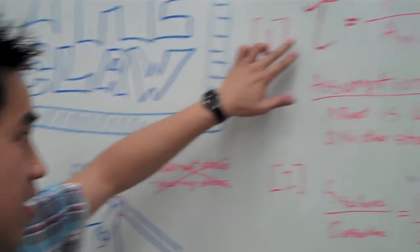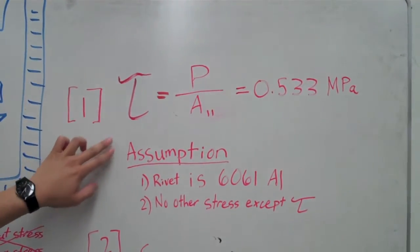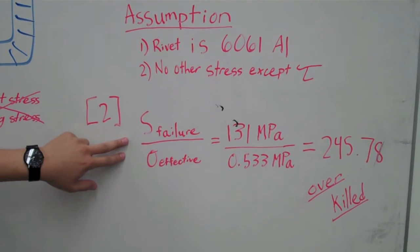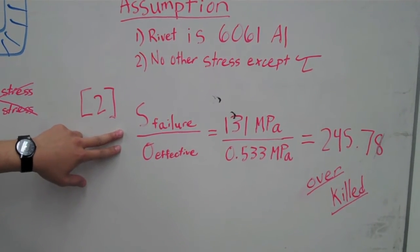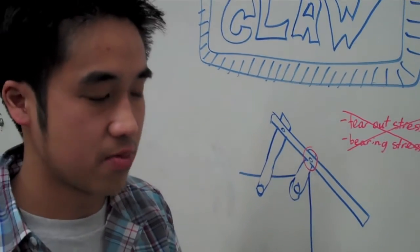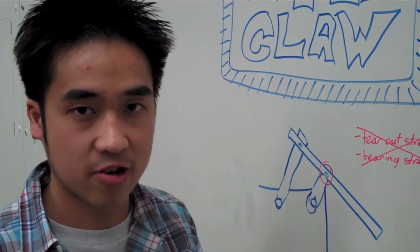We calculate the shear stress to be this value. We assume these for our design on the rivet, and we calculate that the safety factor for our design is 245, which indicates to us that it's well beyond the safety limit of our design.